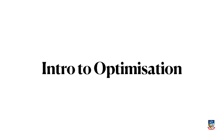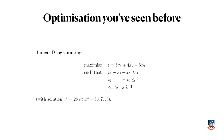Let me segue into this topic by talking about the types of optimization you've seen before. Here's a type of problem you would have seen in Maths 1: a linear programming problem — maximize some linear function with some constraints. This is the sort of thing you can solve using the simplex algorithm.